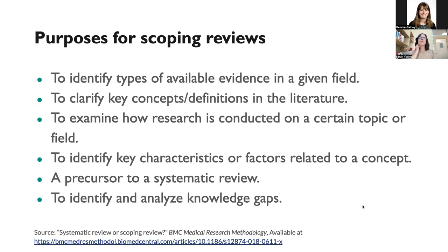This would include identifying the different types of evidence available in a given field. You might be interested in looking at the way concepts and definitions are operationalized in the literature. We can use scoping reviews to examine how research has been conducted on a particular topic, identify key characteristics or factors related to a concept, and identify knowledge gaps — where the research still needs more work, but also where there is saturation enough to conduct a systematic review.